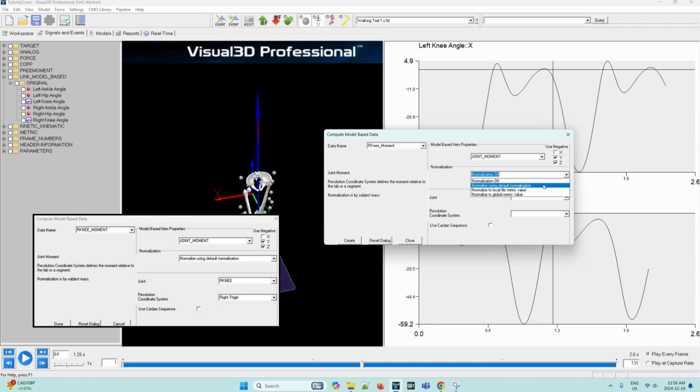For the normalization, we can set it to normalize using default normalization, which divides joint moment by the subject mass. A note is that any metric value can be used for normalization. As you can see, there are four options for normalizing the joint moment model based signal. There's normalization off, normalization using the default normalization, normalization to local file metric value, and normalize to global metric value. So of course, we can select the default normalization, and then the joint will be our knee. And then the resolution coordinate system is usually the segment proximal to the joint. So in this case, the right knee moment is resolved in the segment coordinate system by the right thigh. So we can select right thigh. And then we can click create.